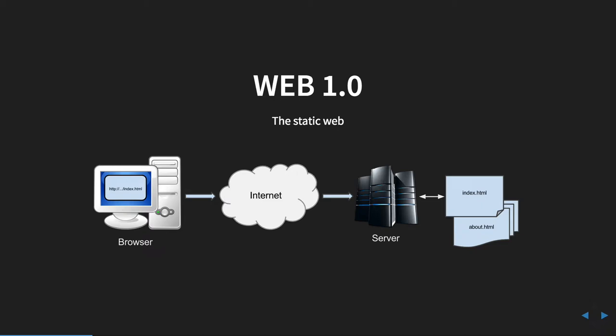Taking a step back to Web 1.0 — this was the static web. When you were browsing a website, you would type in the domain on your browser. That request would go through the internet and hit a server. When you typed index.html or contact.html, the browser would literally look for a file on the server with the same name, find that HTML document, and send it to the browser for the user to see. This was the static web.